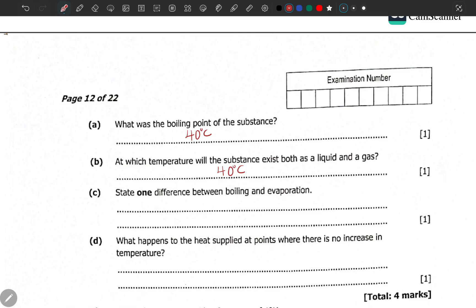State one difference between boiling and evaporation. Well, they all look the same because they involve the change of state of a liquid to gas. Now what's the difference between these two? Boiling takes place throughout the liquid. Remember that the entire liquid is boiled, but evaporation takes place on the surface of the liquid. So boiling takes place throughout the liquid, while evaporation takes place on the surface of the liquid.